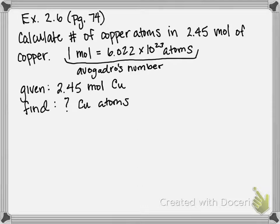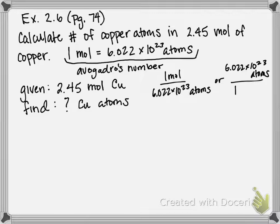So this number, this equivalency, is like saying 1 mole contains 6.022 times 10 to the 23rd atoms, or there are 6.022 times 10 to the 23rd atoms in 1 mole. And which one we write on top or bottom depends on what we're trying to get to.